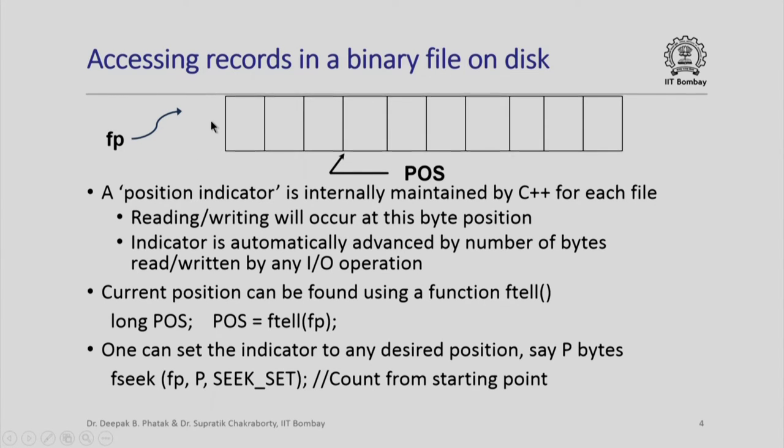A binary file, like any other file, is a sequence of bytes and there is a file pointer fp associated with the file name. Please note that an internal position indicator is maintained by C++ for each file. Any reading or writing actually occurs only at this byte position, and whenever a reading or writing occurs, this indicator is automatically advanced by the number of bytes read or written. This is a feature of C++ file processing.